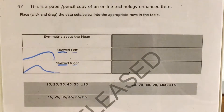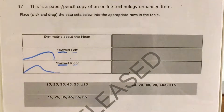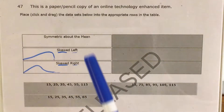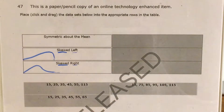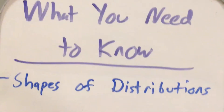What's up, math scholars and math haters? This is Mr. W. Today we're going to tackle question 47 in the Math 1 questions that North Carolina released this past school year. This question is asking us to take these three sets of data and say whether each one is symmetric about the mean, skewed left, or skewed right. So this question is testing you on your knowledge of shapes of distributions.